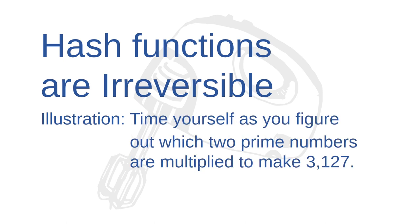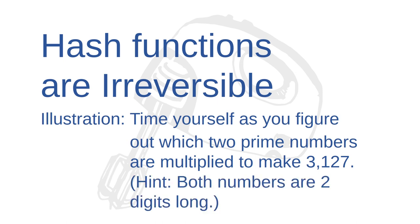Now, let's do a similar problem, but let's do it in reverse. This time, let's consider the number 3,127. 3,127 is the product of two prime numbers, just like how 533 is the product of 13 and 41. Can you figure out which two prime numbers multiplied together produce 3,127? I'll even give you another hint. Both prime numbers are two digits long.